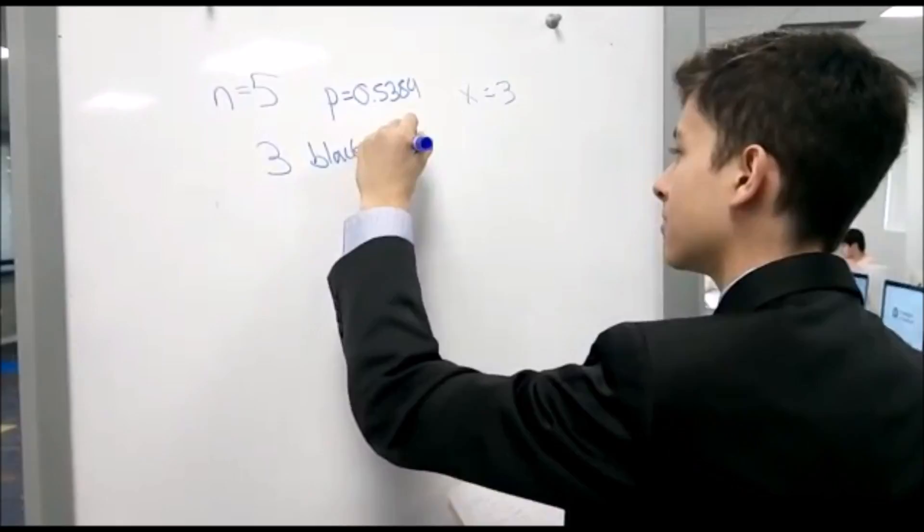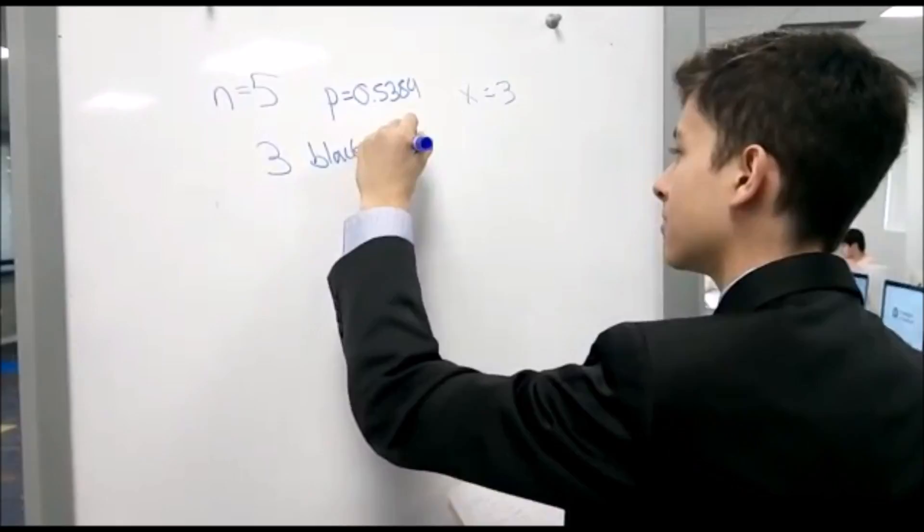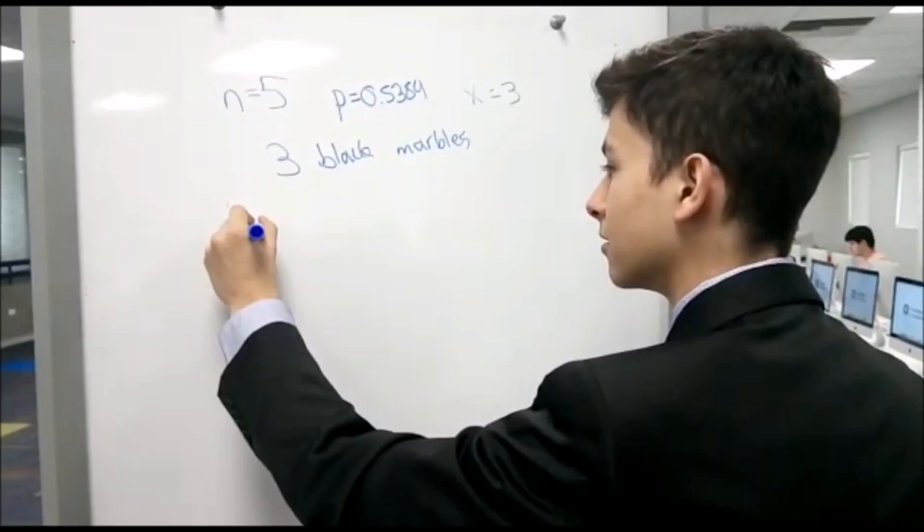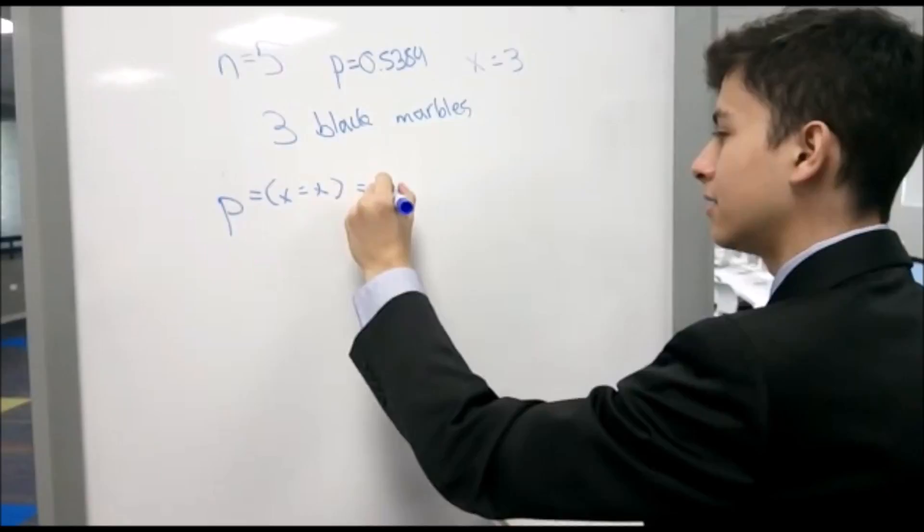Okay, so we want to find 3 black marbles. After that, you're going to want to use the formula, which is p(x) is equal to nCx.